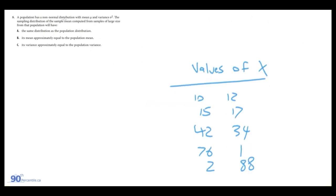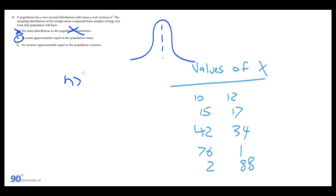Building on that, question 8: a population has a non-normal distribution with mean mu and some variance. The sampling distribution of the sample mean computed from large samples will have the same distribution as the population distribution — we don't know what that is, so this is incorrect. Option B says its mean is approximately equal to the population mean. This is correct. There are actually two things the central limit theorem states: the distribution of the sample mean will be normally distributed as N is greater than 30, and the mean of the sample will be approximately equal to the population mean.